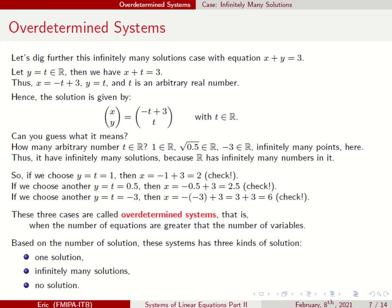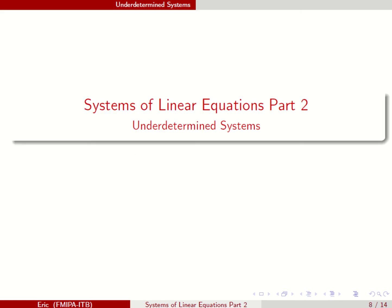These three cases are called the over-determined system — that is when the number of equations is greater than the number of variables. You have three kinds of solutions: one solution, infinitely many solutions, or no solution at all, as seen in the case of two variables and three equations. Next we will discuss the under-determined system in the next session. Thank you.